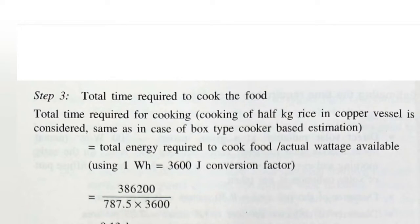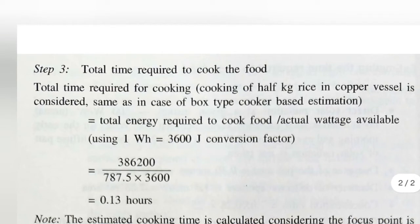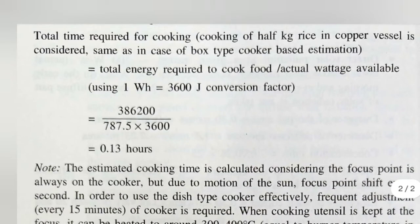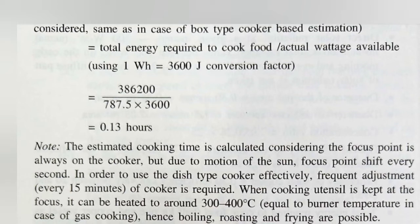Step number three: the total time required to cook the food. We are calculating for cooking half a kg of rice in a copper vessel — the same as in the case of the box type cooker-based estimation. Total energy required to cook the food, divided by the actual wattage available, using the conversion factor 1 kWh equals 3,600 joules, gives us 0.13 hours. The estimated cooking time is calculated assuming the focus point is always on the cooker.